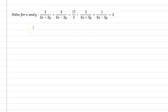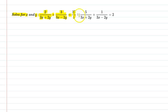Hello students. First of all let us understand the question. The question is: solve for x and y such that 2 upon (3x + 2y) plus 3 upon (3x - 2y) is equal to 17 upon 5, and 5 upon (3x + 2y) plus 1 upon (3x - 2y) is equal to 2. So let's start.